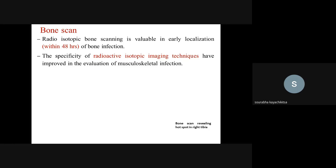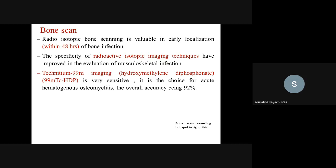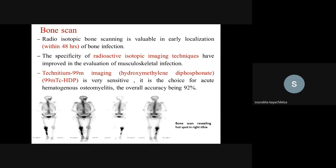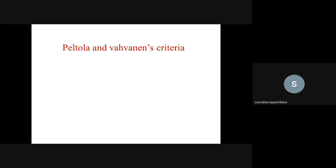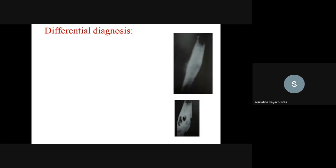Bone scan using radioactive isotope imaging is valuable for early localization within 48 hours of bone infection. Technetium-99 imaging can be used, with an overall diagnostic accuracy of 92 percent. In the scan image, you can identify a hot spot in the right tibial part — the anterior view shows right side on the left of the image, and the posterior view shows right side on the right.